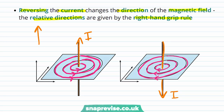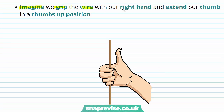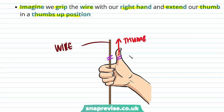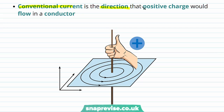The relative directions of the magnetic field are given by the right hand grip rule. Imagine gripping the wire with your right hand with your thumb extended in a thumbs-up position. Your thumb points in the direction of the conventional current, and the curl of your fingers points in the direction of the magnetic field. Conventional current means the direction that positive charge would flow in a conductor, so if positive charge flows this way, the current flows in the same direction.